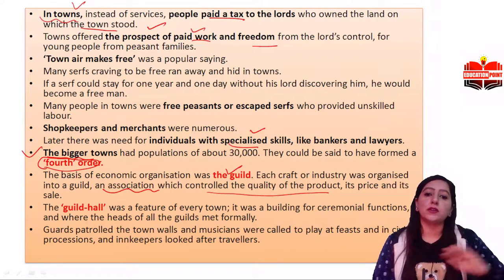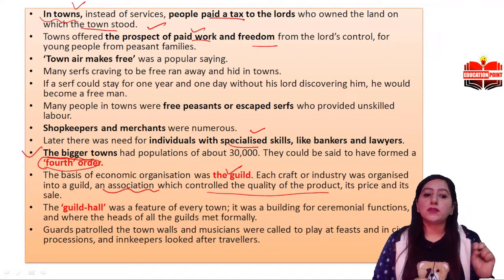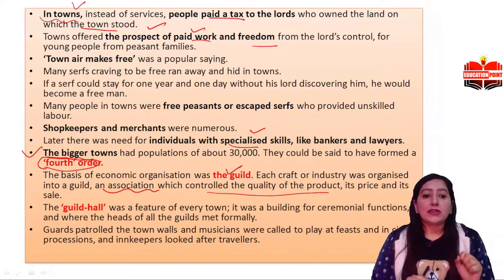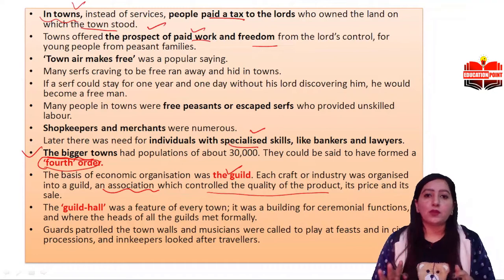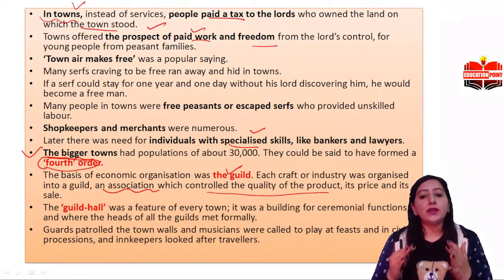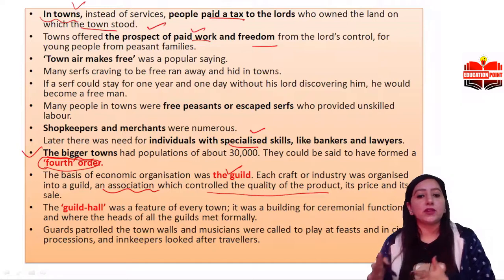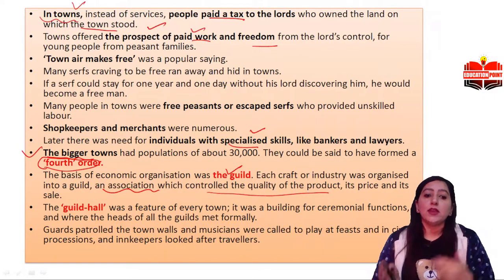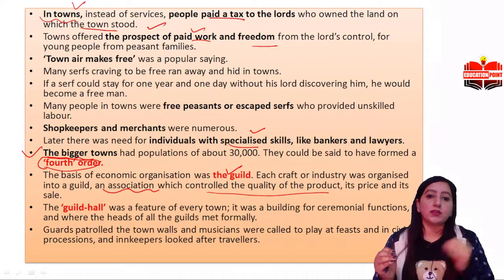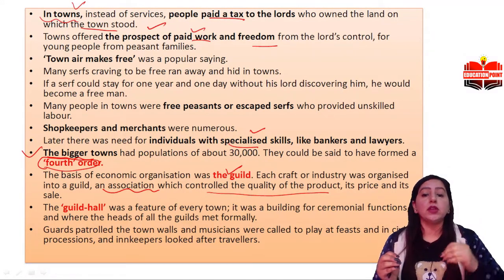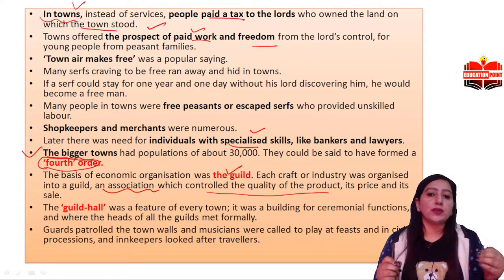This organization started to form. The Guild Hall was a feature of every town — in every town there was a Guild Hall. This was a ceremonial hall for building functions where the heads of all the guilds met formally. Here the guild associations' heads were made, and they had discussions.